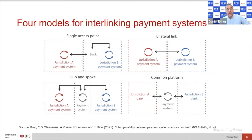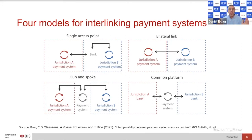Jurisdiction A and jurisdiction B both have their own payment and settlement systems, with a payment and settlement system in the middle acting as the hub. The last model is the common platform, where you have a single platform in a common or offshore region that encapsulates both jurisdictions — a common platform for all jurisdictions on the system.